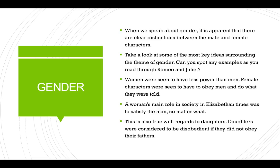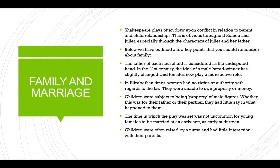When we speak about gender, there are clear distinctions between the male and female characters. Women were seen to have less power than men, and female characters were expected to obey men and do what they were told. A woman's main role in Elizabethan society was to satisfy the man no matter what. Daughters were considered disobedient if they did not obey their fathers. Shakespeare's plays often draw upon conflict in parent-child relationships, which is obvious throughout Romeo and Juliet, especially through Juliet and her father.